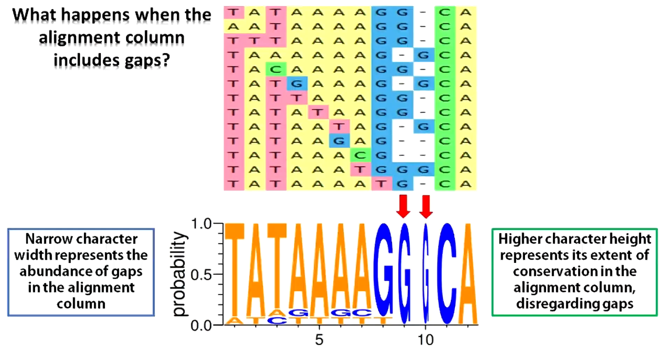Now what happens if there are gaps in the alignment? Look closely guys. I have shown you two columns with gaps. The right one has a lot more gaps than the left one. See the difference. The column with the most number of gaps is represented as a narrow character. The character still spans the entire range of 0 to 1 but narrow. The column with fewer number of gaps has wider character but still narrower than the columns with no gaps.